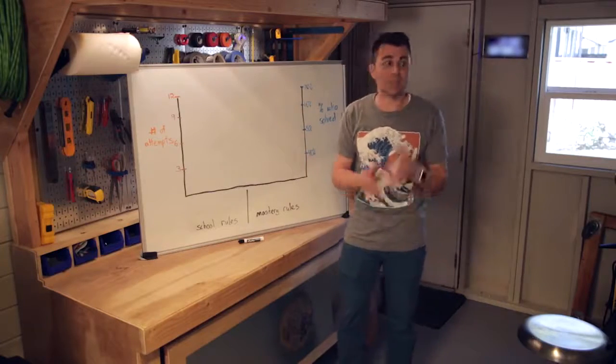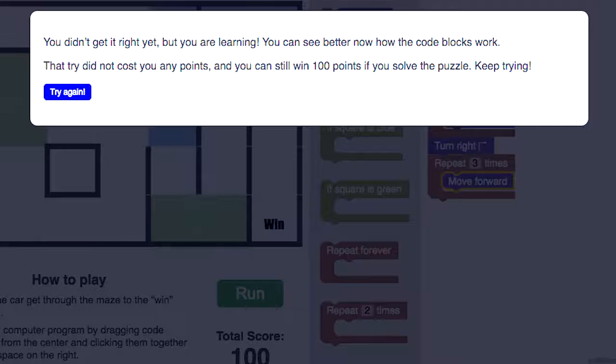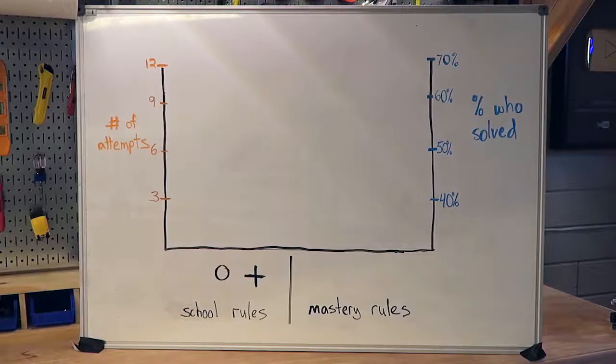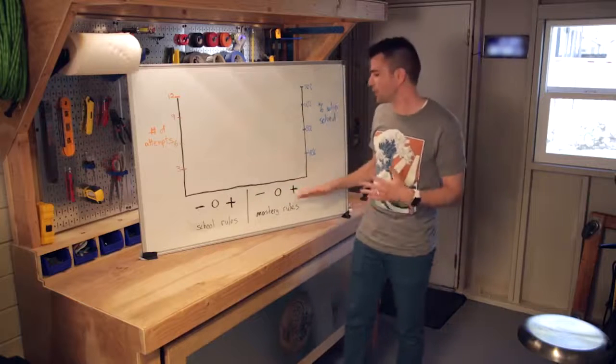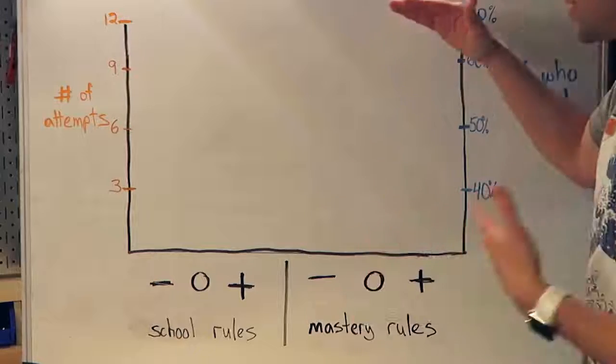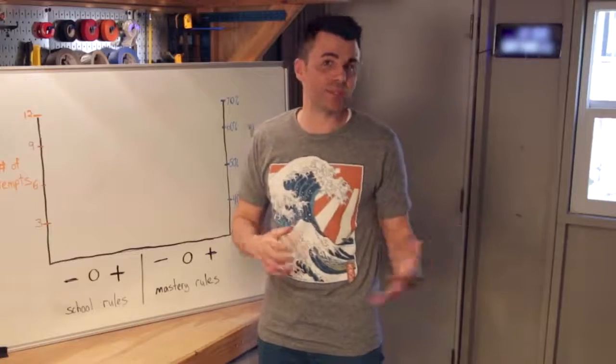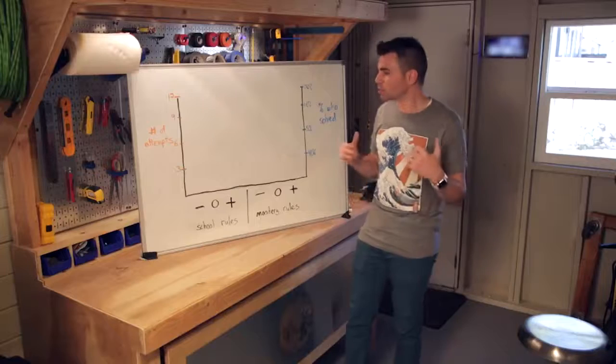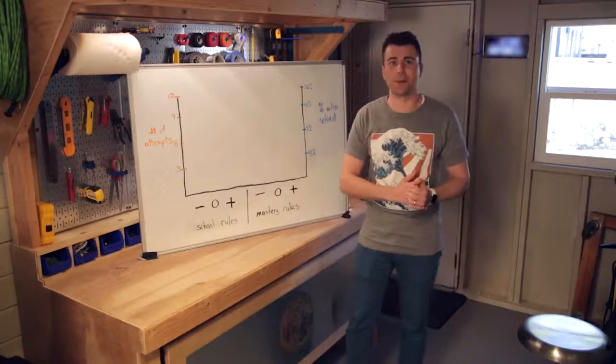The second knob we turned to vary the test was the messaging you received after you ran the code. Positive messaging encouraged you to keep trying and not give up. Neutral just stated if you were correct or not. And negative tells you to be careful not to mess up and puts the focus on your failings. So think right now of these six flavors—which you think would have the highest or lowest success rates. Because over 50,000 of you engaged in this puzzle, the results you're about to see are highly significant from a statistical standpoint.